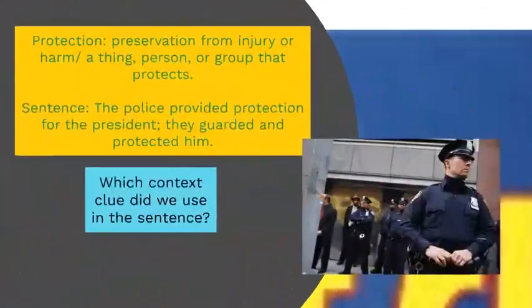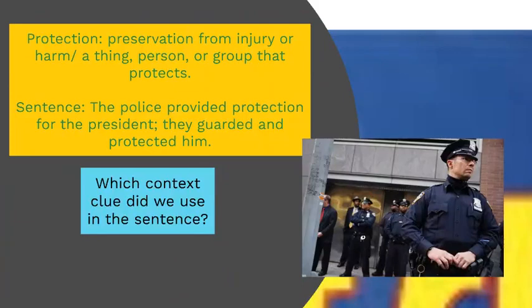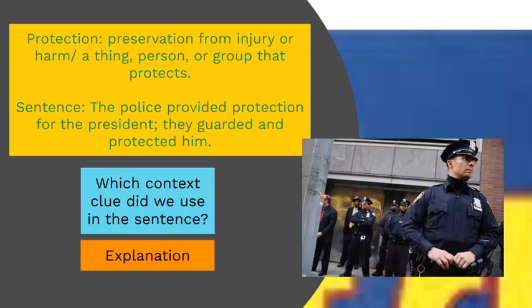Moving on to the next word: protection. Protection is preservation from injury or harm — a thing, person, or group that protects. Here's a sentence: 'The police provided protection for the president. They guarded and protected him.' Which context clue did I use? Did I use synonyms? Antonyms? Or did I give further explanation? I provided an explanation for the word protection by saying they guarded and protected the president. So the context clue in this sentence is explanation.